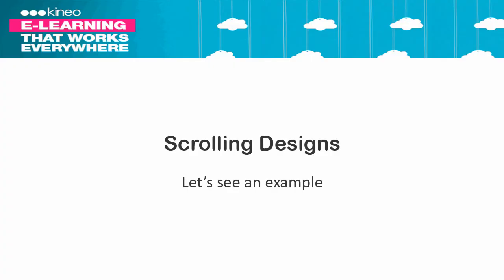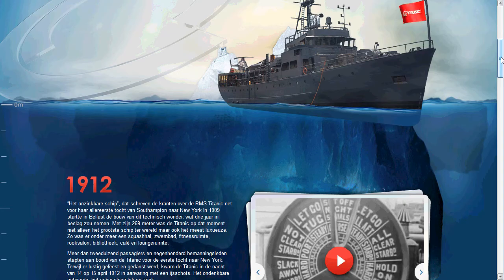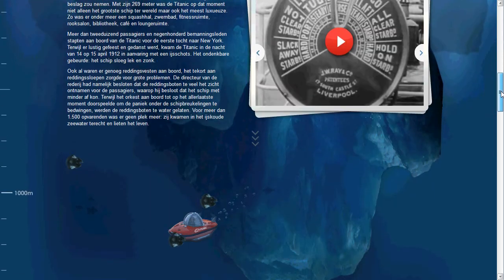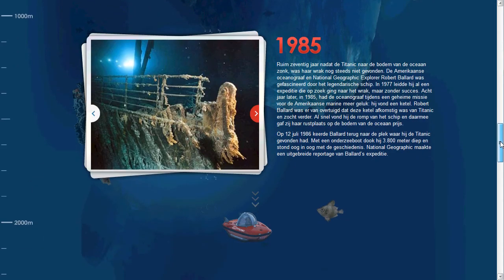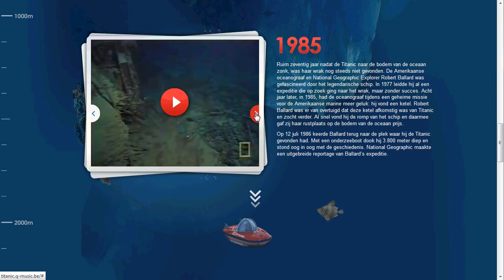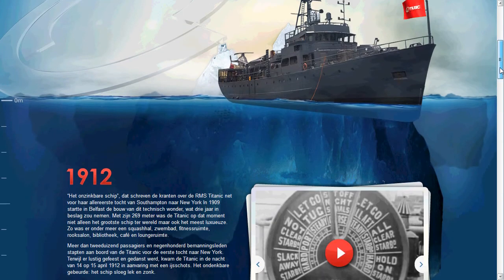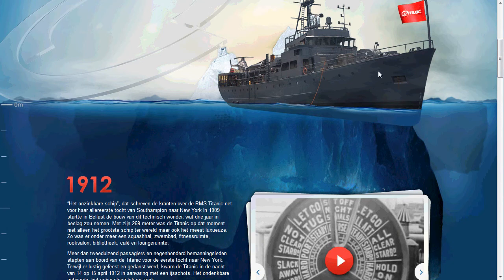The other technique that the web is using a lot is scrolling designs. Here's an example of that — this is a website about the Titanic. As you can see, I can scroll up and down here to plumb the depths and access various different content items within the design. So scrolling is a more elegant version of the back-next world that we're most familiar with in e-learning.